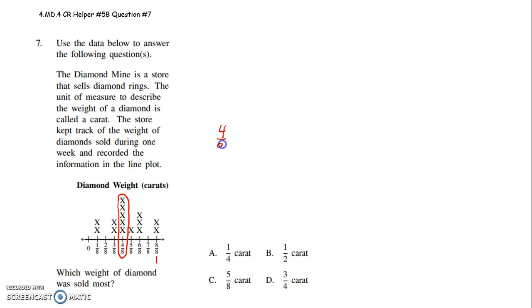So four-eighths of a carat was the type of diamond sold the most. That was the weight that they sold the most that week because they sold 1, 2, 3, 4, 5. The next closest was 3, so they sold 5 of them.